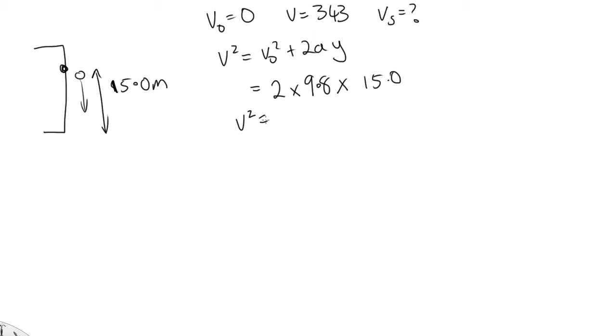And so the velocity squared is equal to 294, and so the velocity of the source just before it hits the ground is 17.146 meters per second.